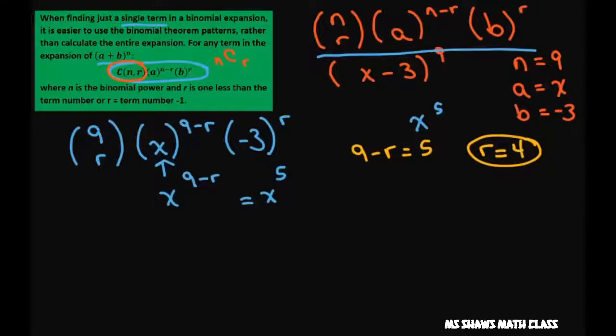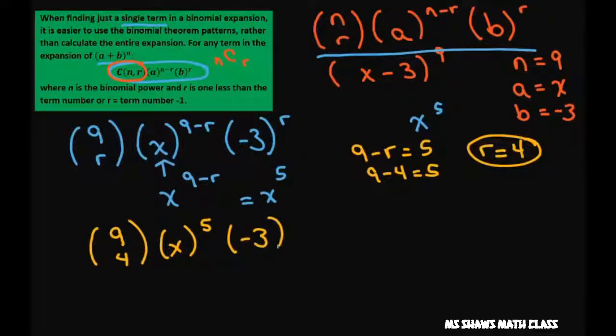Now let's plug that in. So we have 9 choose 4, x to the 9 minus 4. This is going to be 5 because 9 minus 4 equals 5. And then we have negative 3 to our r power, which is 4.